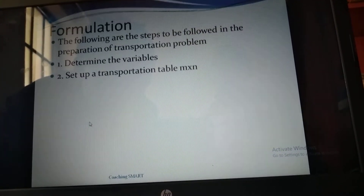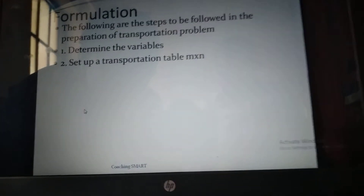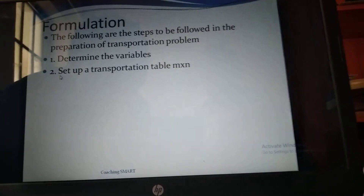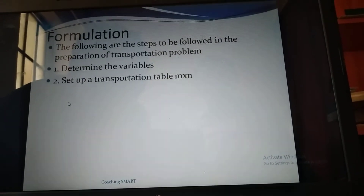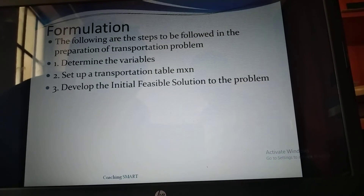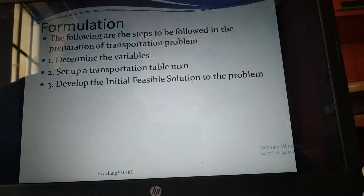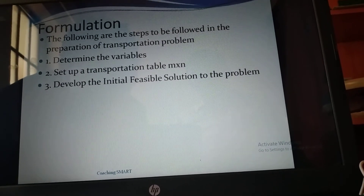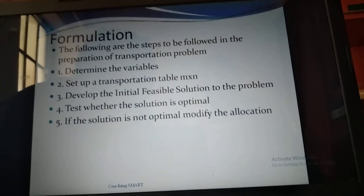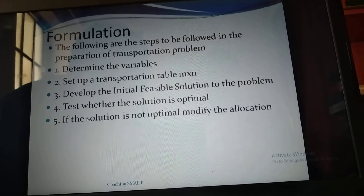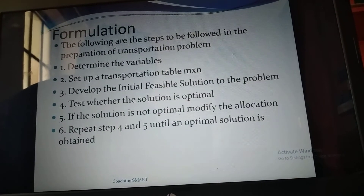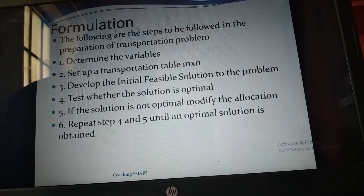Formulation steps for the transportation problem: one, determine the variables; two, set up the transportation table; three, develop the initial feasible solution; four, test whether the solution is optimal — if not, modify the allocation; five, repeat steps four and five until an optimal solution is obtained.